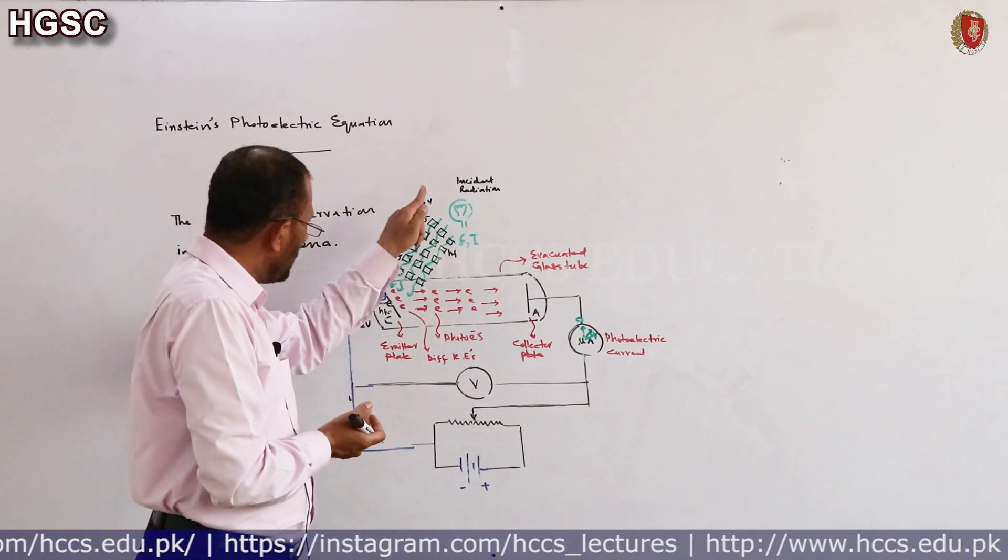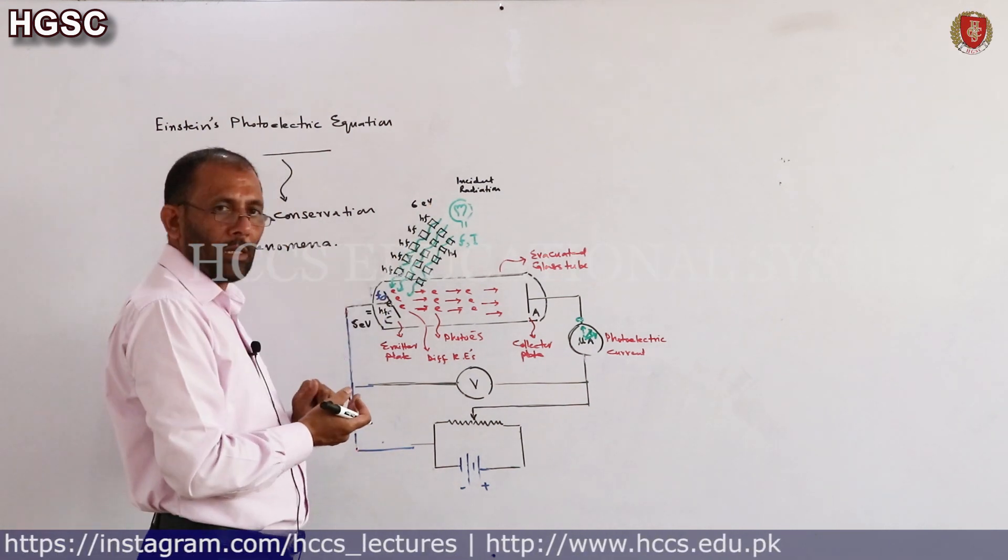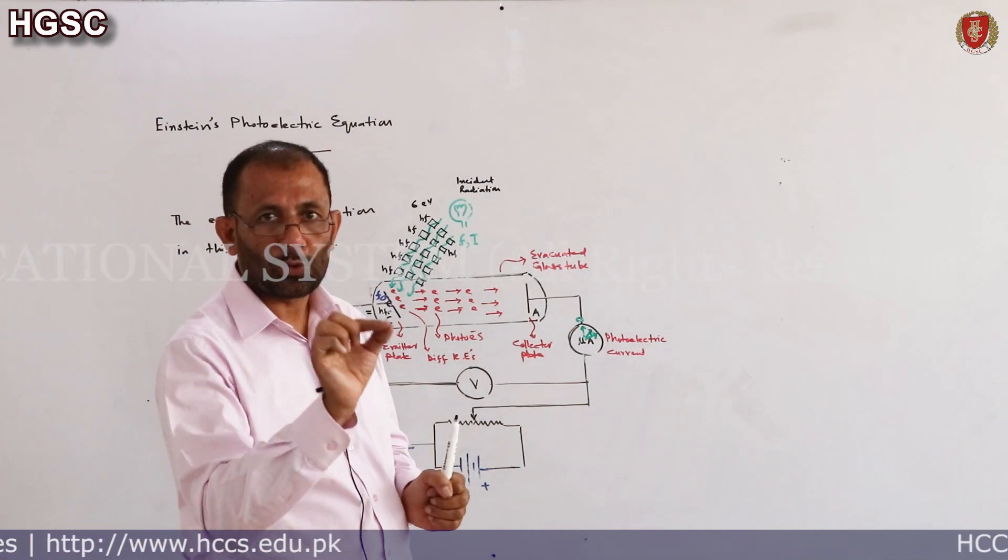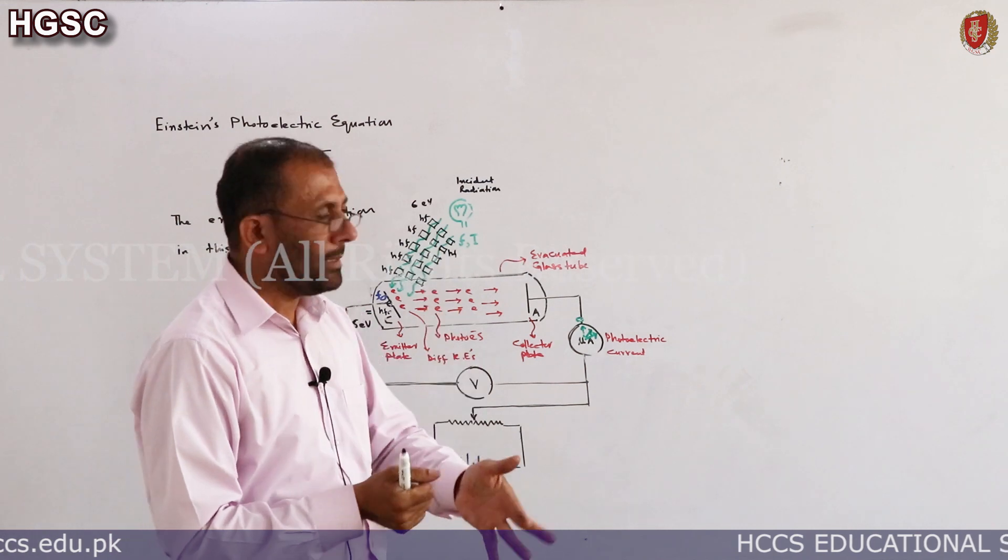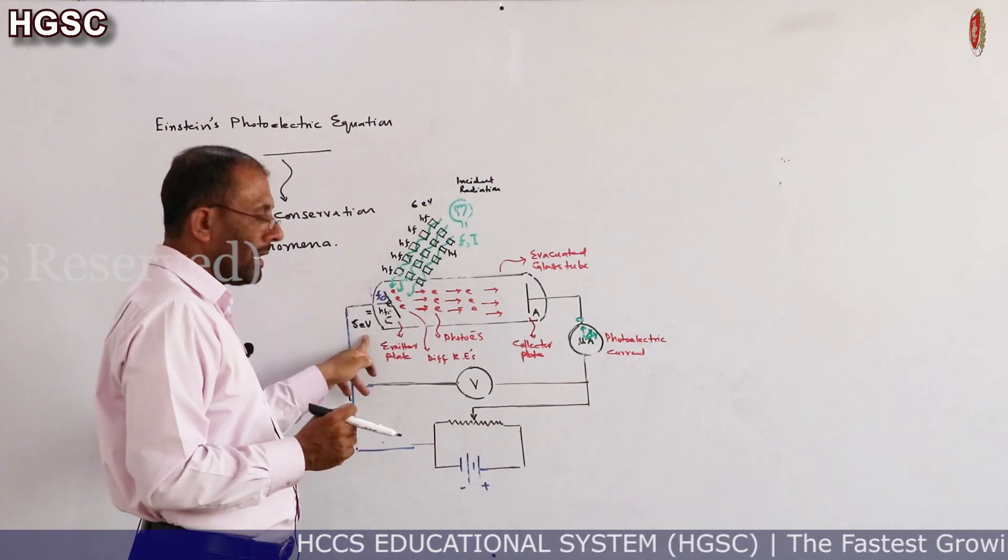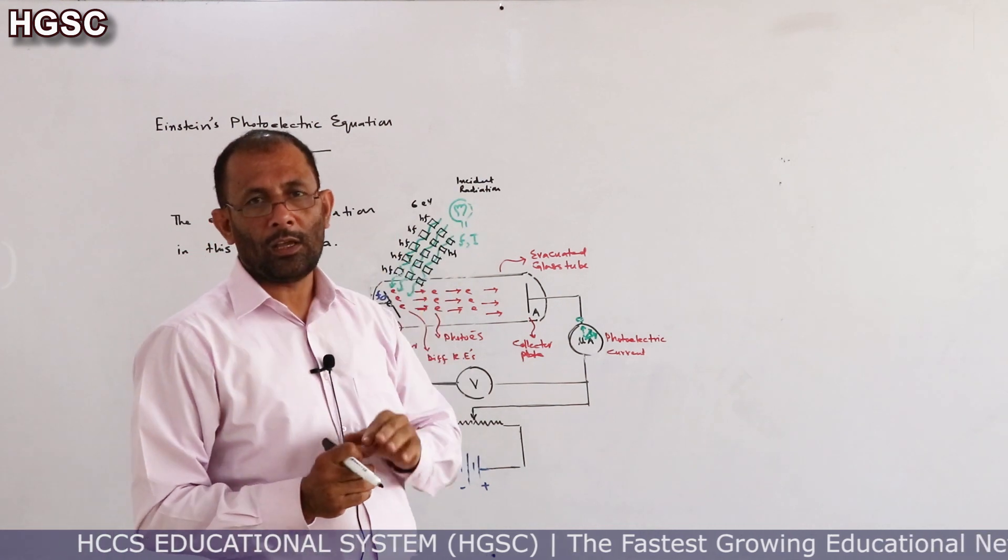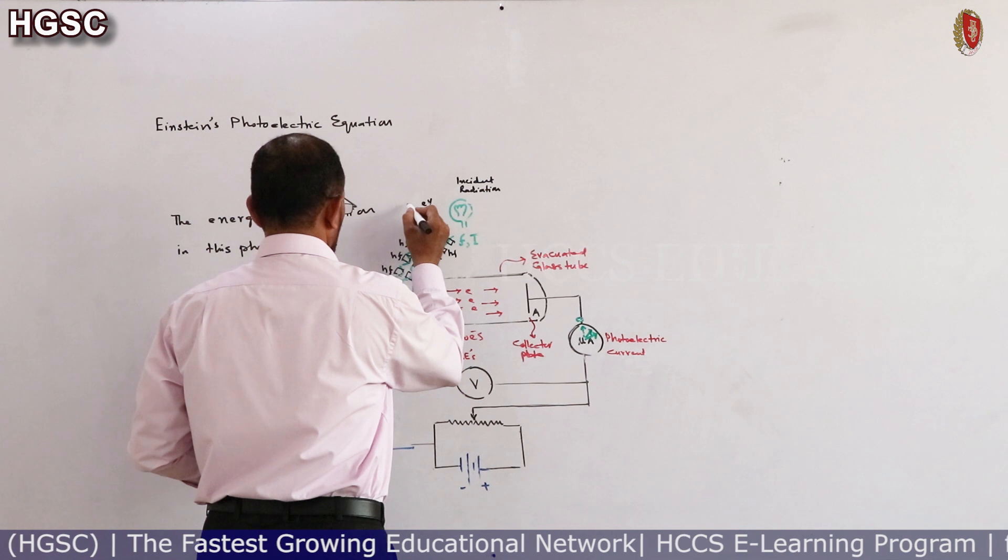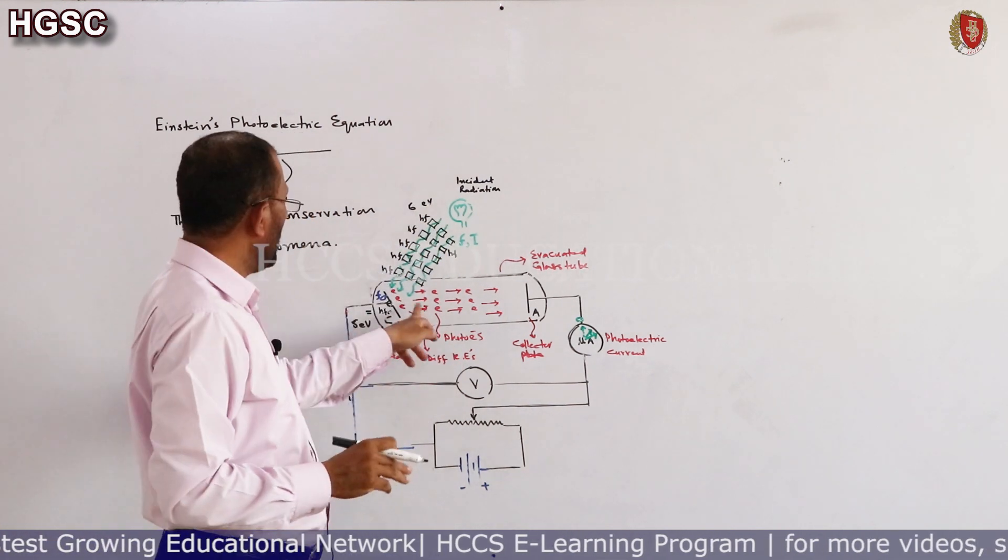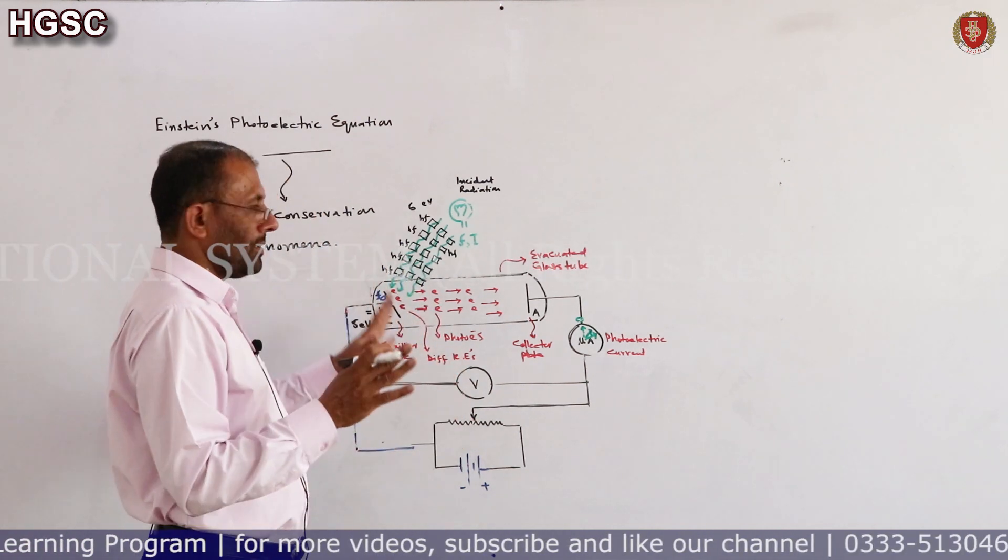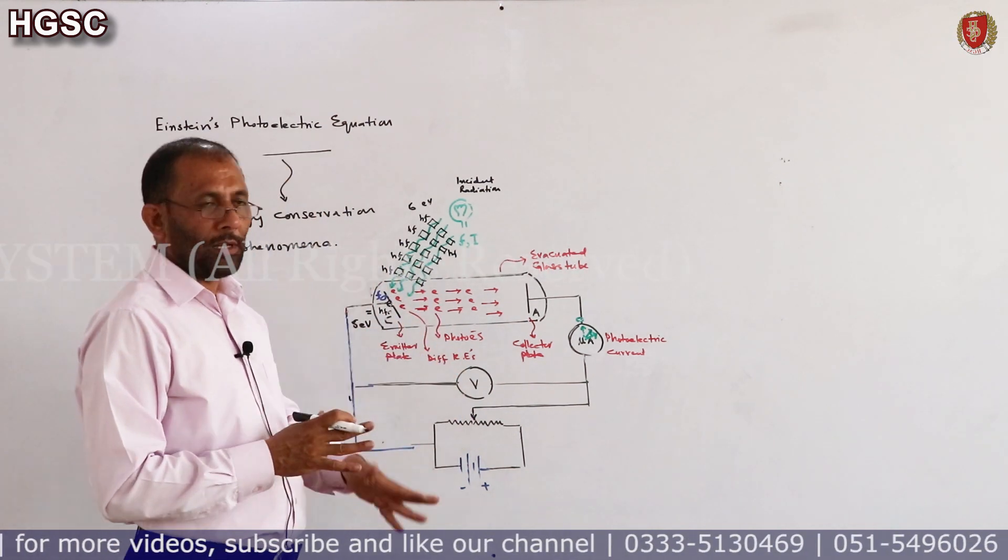If energy of photon is 6 electron volts and work function of metal is 5 electron volts, now when these photons fall on the metal, the electrons that come out will have kinetic energy from zero to 1 electron volt. Maximum will be how much? The difference between the photon's energy and the metal's work function. This will be the electron's maximum energy. If this energy becomes 7 electron volts, now these electrons' energy will be from zero to 2 electron volts. So understand that maximum kinetic energy of electron is the difference of energy of photon and the work function of the metal.